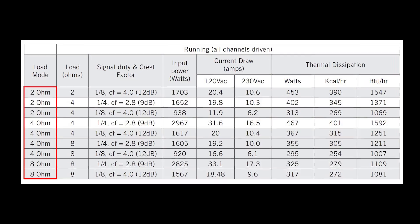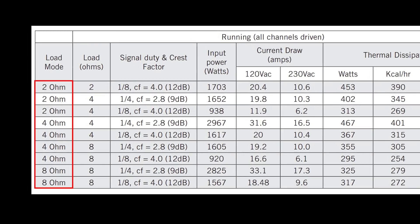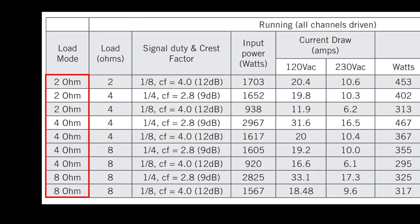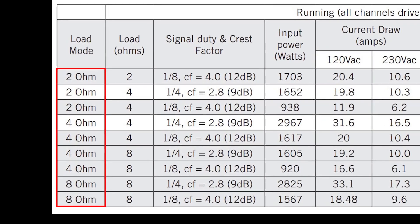Written on the back panel of the amplifier or in its technical specifications, you'll find the impedance rating of your amplifier. The impedance rating of an amplifier usually ranges between 2 ohms and 16 ohms. This video will help you ensure that the load presented by your speakers fits within the range of your amplifier's impedance rating.